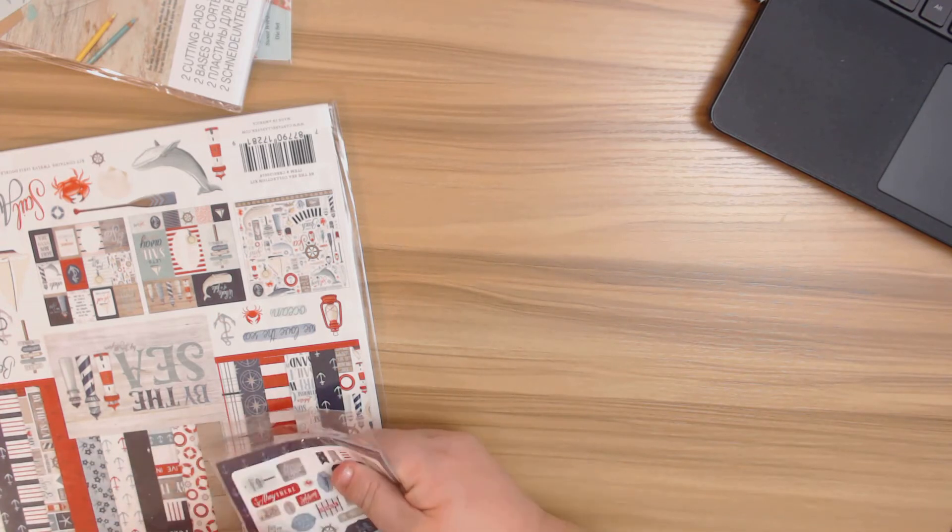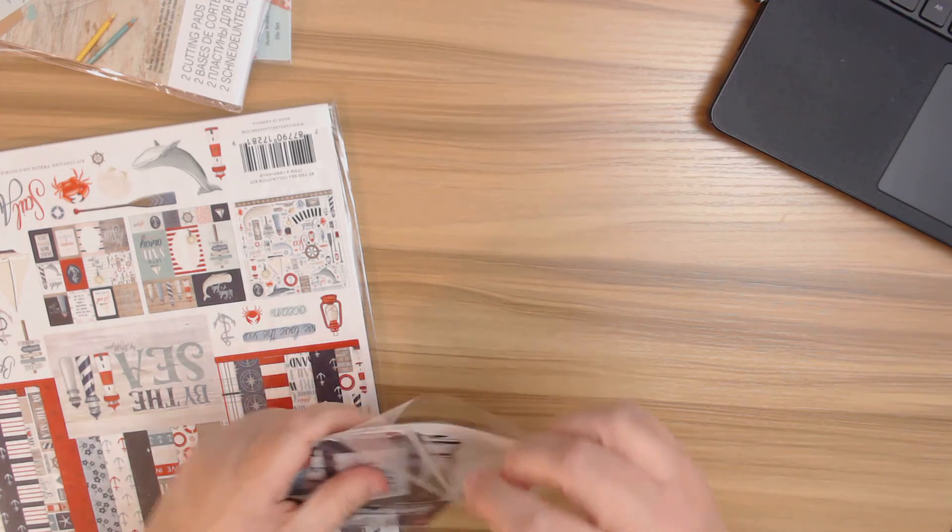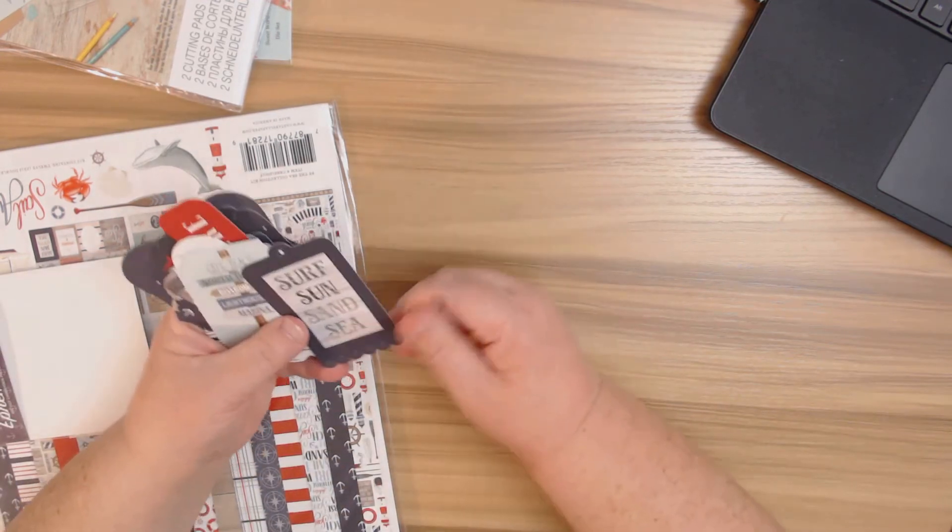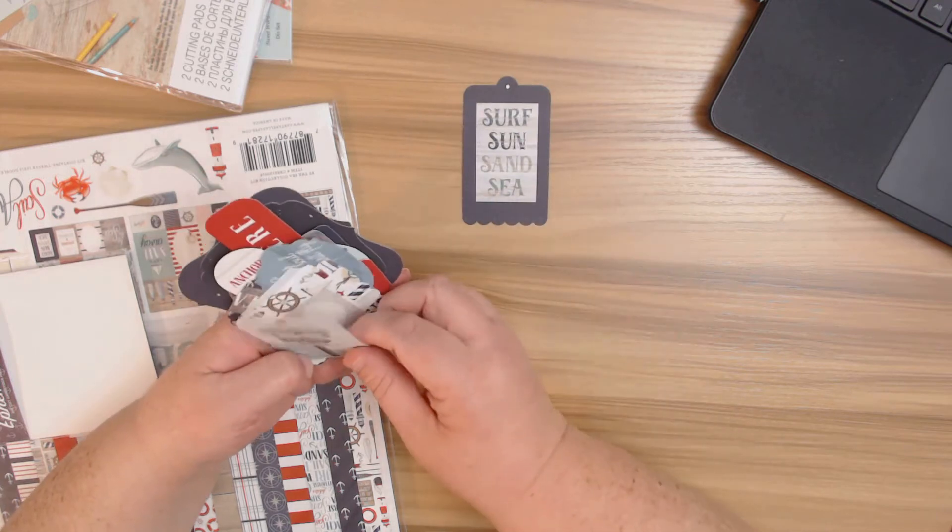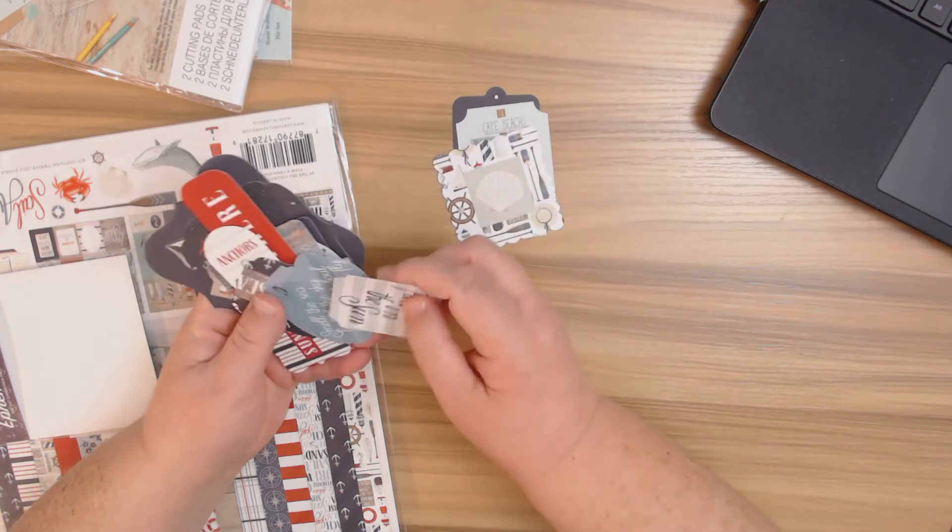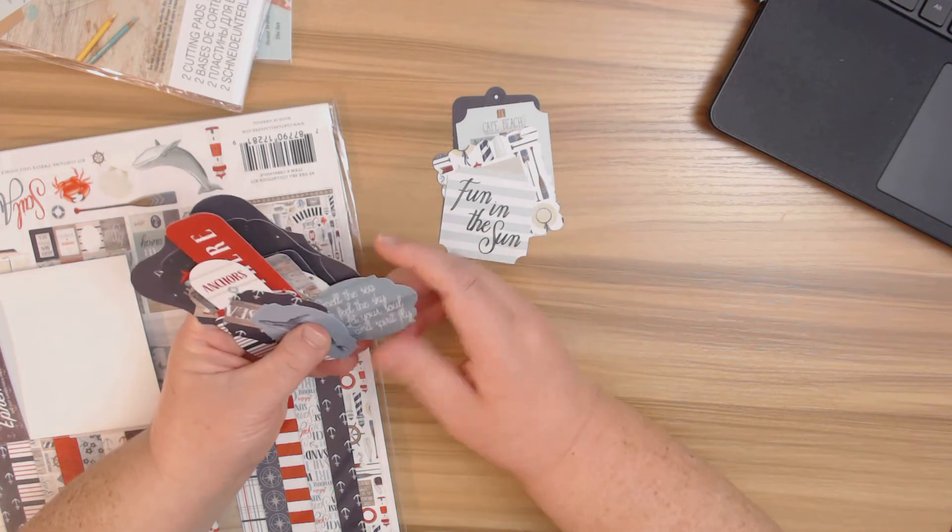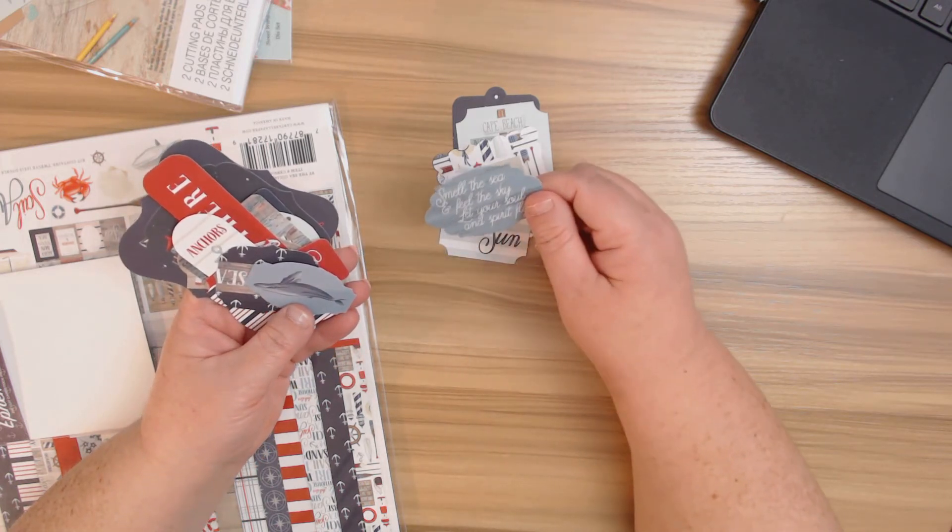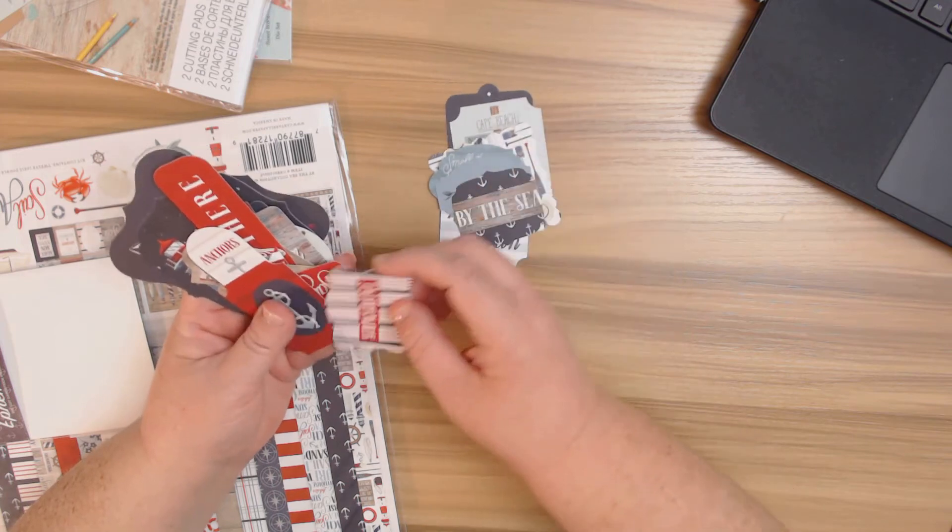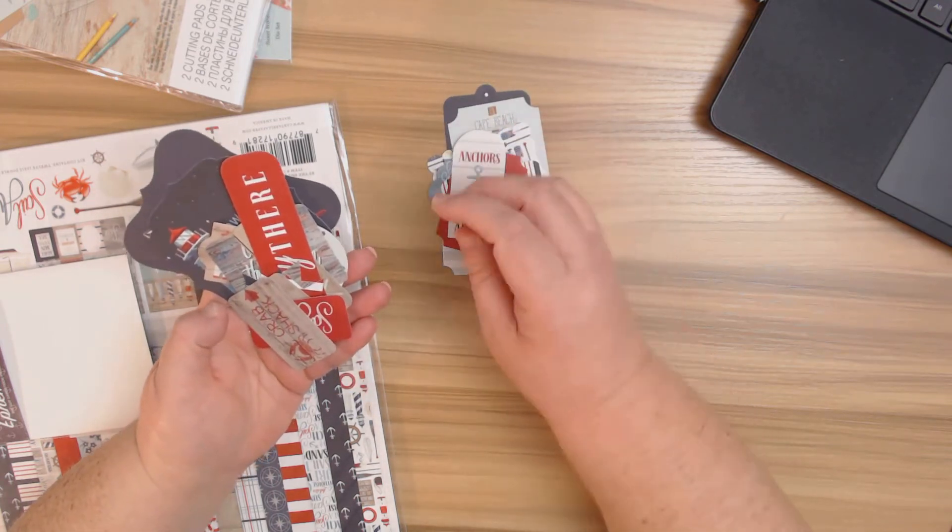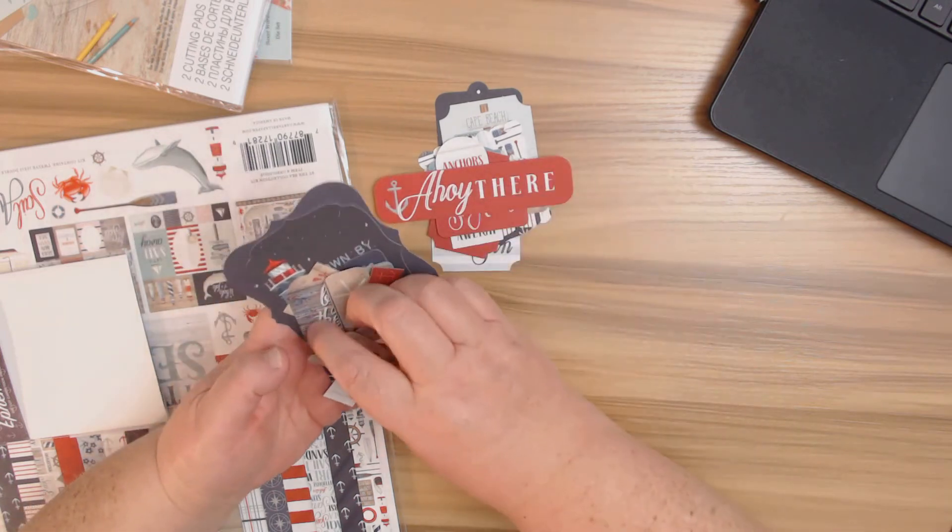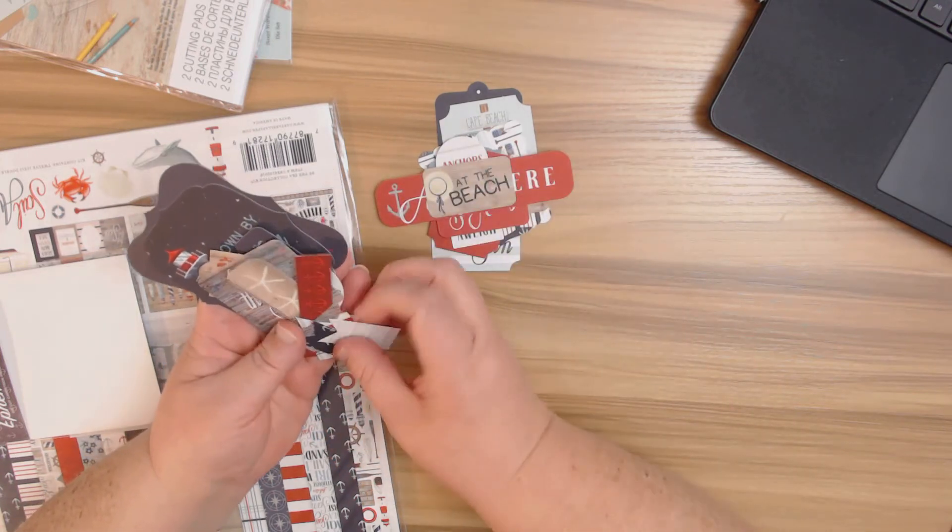I love the little text for journaling and that's specifically why I chose this one. You have Surf, Sun, Sand and Sea. I love Cape Beach, North Beach, Boardwalk, Lighthouse, Marina. You have a little frame with the shell inside. Fun in the Sun. Smell the Sea and Feel the Sky, Let Your Soul and Spirit Fly. Oh I like that one. And then you have a little whale. By the Sea, Sunshine, another anchor, Anchors Away. That's cute. Crab Shack, Sail Away, Ahoy There, At the Beach. And then we have some flags. Super cute.